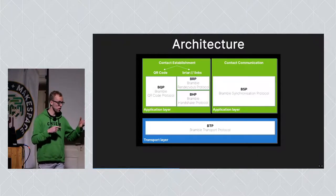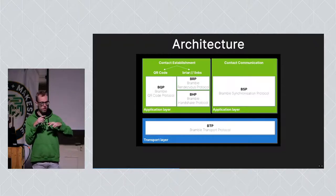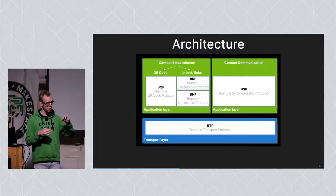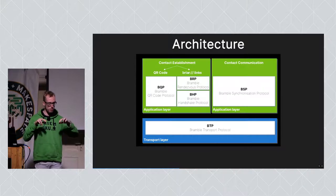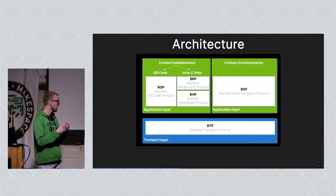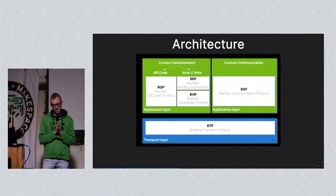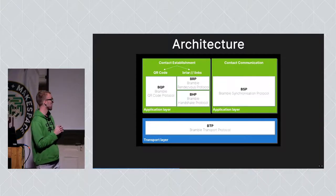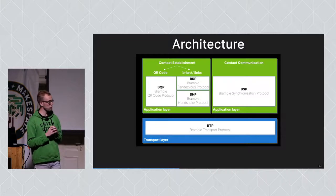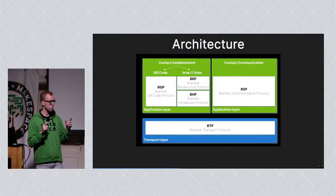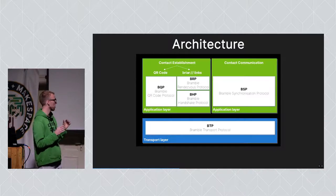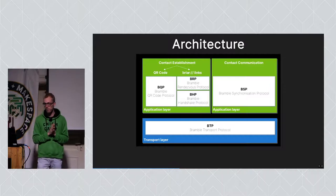Basically you have to remember where your contacts are reachable over which transport. For example, we store the Bluetooth MAC ID of your contacts, so that once you are close and you see a MAC ID you know, you automatically connect to your contact. This is the Bramble QR code protocol. Some two years ago we also added the option to make contact via Briar links. For this we use two protocols: first the Bramble Rendezvous Protocol, so that you can discover where your contact is in the peer-to-peer network, and then once you've made the connection, the Bramble Handshake Protocol.